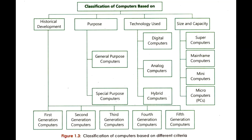Moving forward, we are going to see the classification of a computer system. A computer system can be classified on the basis of historical development, purpose, technology use, size and capacity.